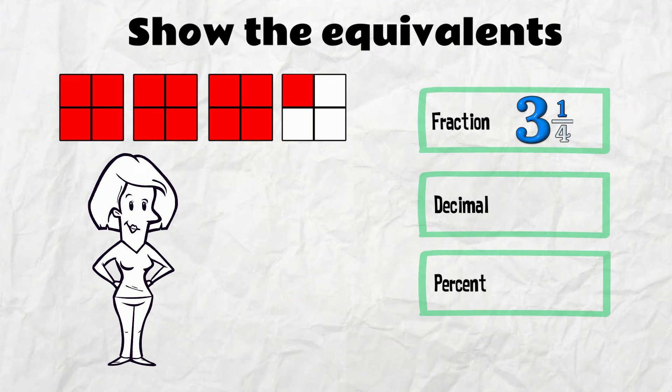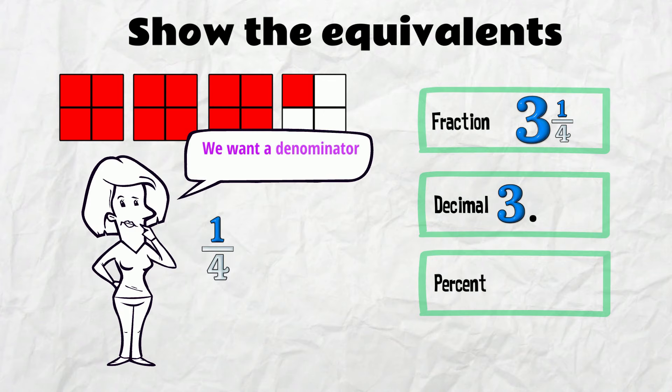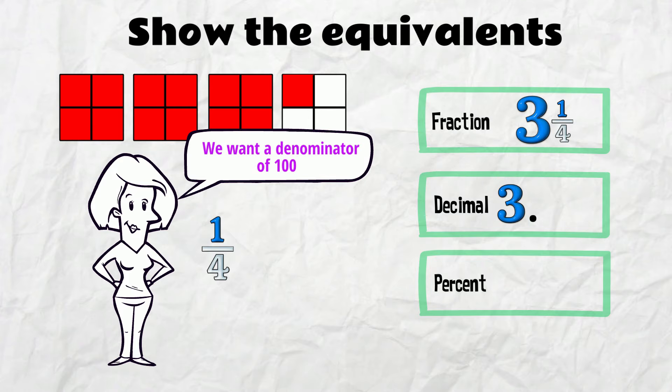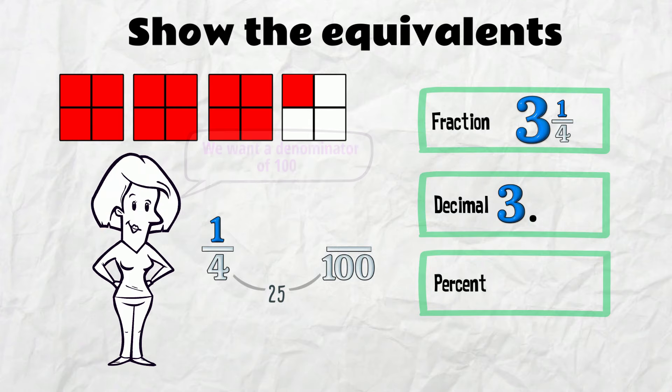What about the decimal equivalent? 3 whole ones, point, and then the quarter. Well, we want a denominator of 100. Multiply by 25. Same up top!